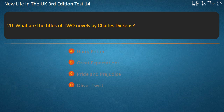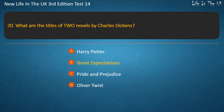Question 20. What are the titles of two novels by Charles Dickens? Harry Potter, Great Expectations, Pride and Prejudice, Oliver Twist. Answer: Great Expectations and Oliver Twist.